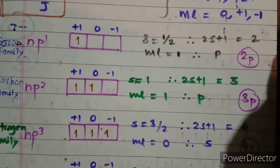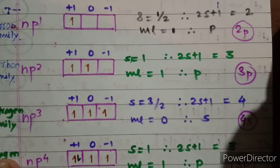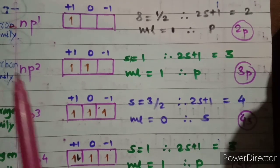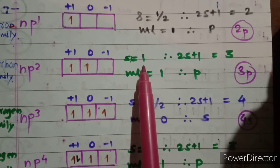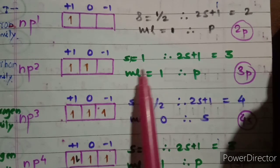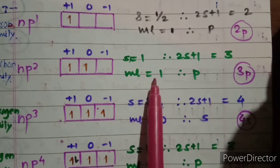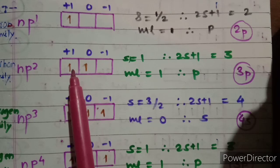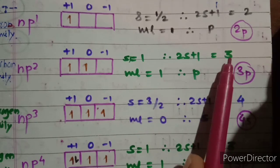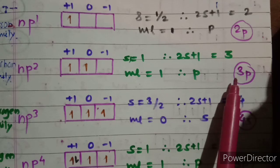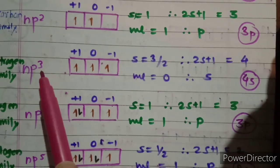For np2, the carbon family, two electrons are present in the p orbital. S = ½+½ = 1, so 2S+1 = 3. ml = 1, so L = P. The term symbol is ³P for the np2 configuration.